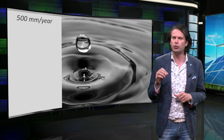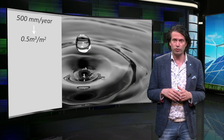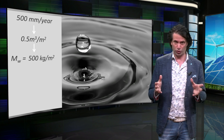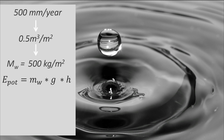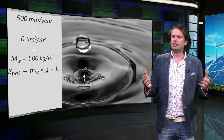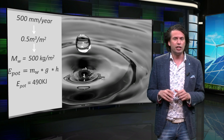500 mm of rain per year is equal to half a cubic meter of water per square meter. By multiplying that with the density of water, which is around 1000 kg per cubic meter, we get that per square meter of land there is 500 kg of water per year. To calculate the potential energy of this amount of water, we use the equation: E_pot equals m × g × h, where E_pot is the potential energy in joules, m is the mass of the water in kilograms, g is the gravitational constant equal to 9.8 m/s², and h is the height difference between the source and the outflow of the dam, which we assume here to be 100 meters. For these numbers, we get 490 kJ of potential energy per square meter per year, which is equal to about 0.14 kWh.